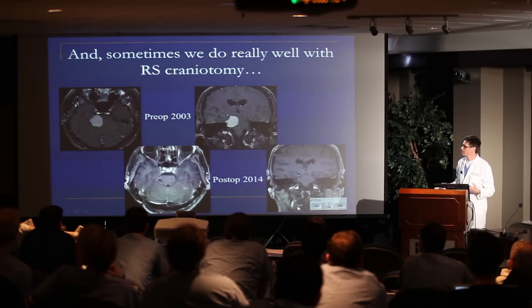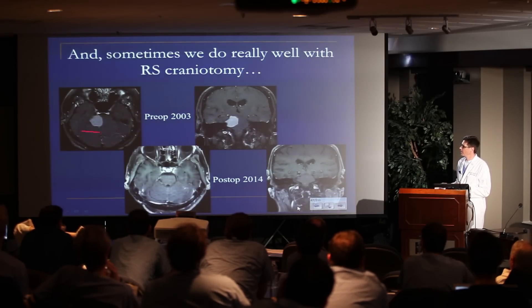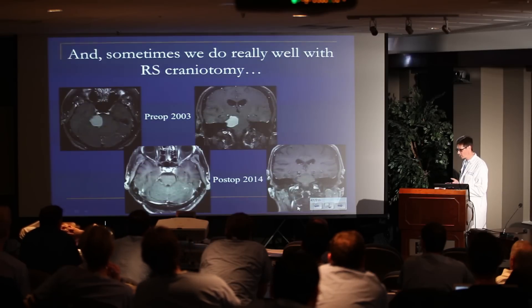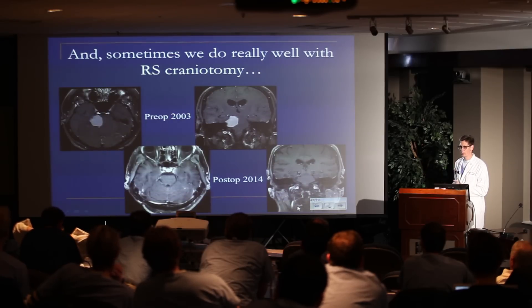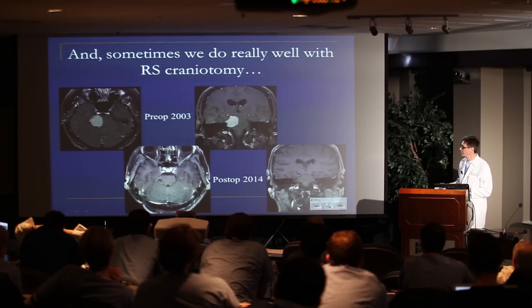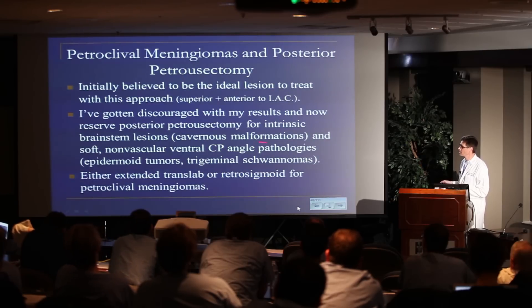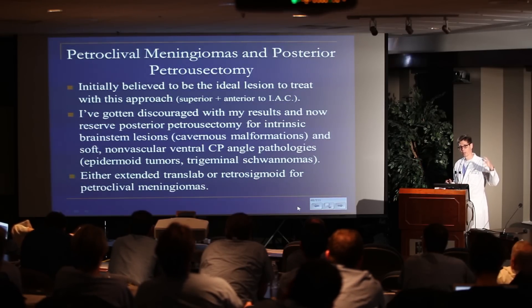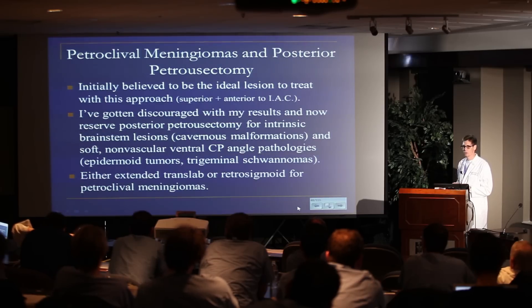That was only one out of about the first 25 where I thought I really made a difference. And then it occurred to me — this is interesting given what Jeff said earlier — there was a case I was contemplating doing a posterior petrosectomy on, but the vein of Labbé came in very early into the tentorium and was right in the way of where I wanted to cut. So we just went retro-sigmoid and took the tumor out. I saw her back last month in routine follow-up, 11 years later — so far so good. I've really tempered my enthusiasm for posterior petrosectomy for petroclival meningiomas.